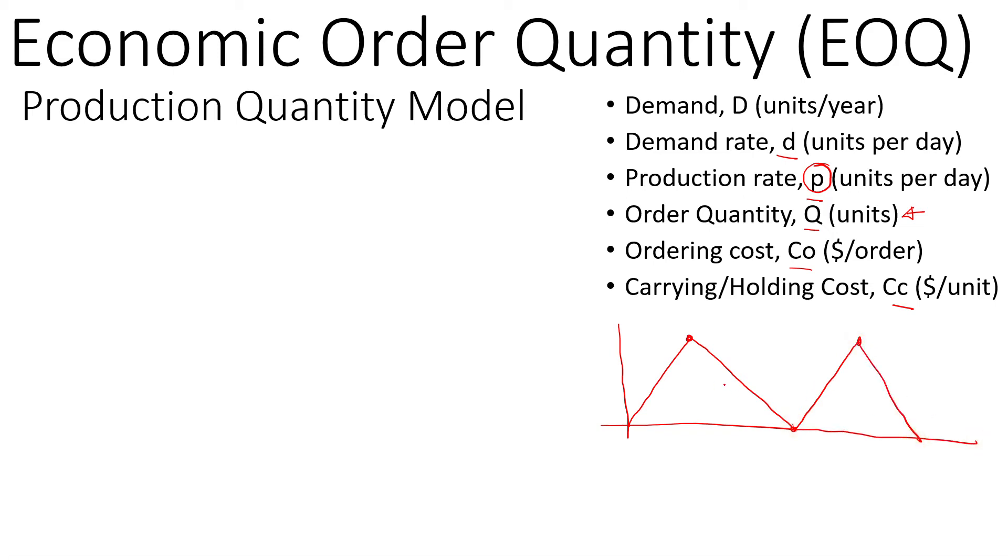On this line we have both demand and production—demand plus production. But here we only have the demand. To determine the number of inventory, this x is the inventory.